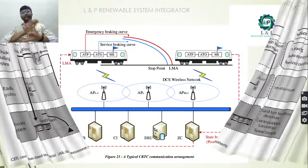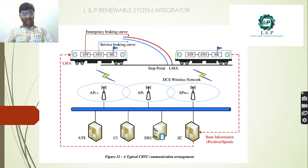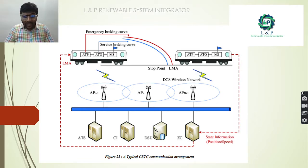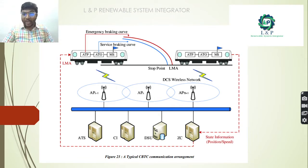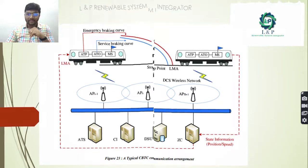This is a typical example of a CBTC communication arrangement. We have ATAS, DSU, zone control, and DCS wireless network. Apart from these, the on-board equipment in the train includes ATP and ATO, along with emergency braking services and service braking curve.